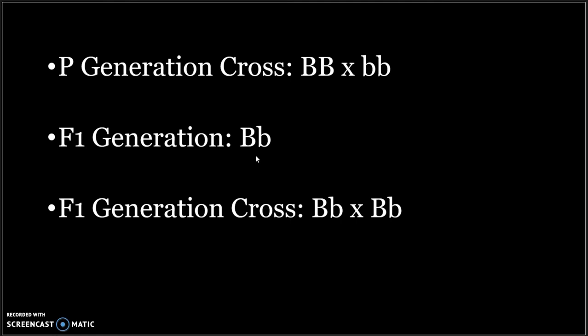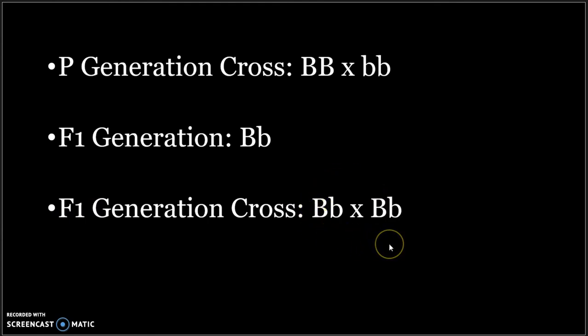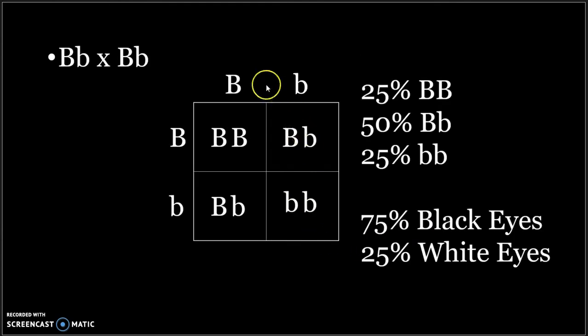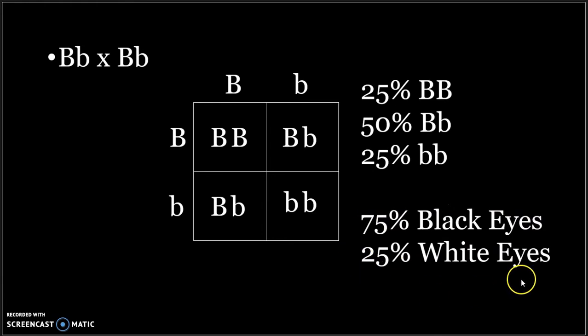To do the chi-squared test, we need expected values for the F2 generation. To get the F2 expected values, we cross the heterozygotes from the F1 generation. For this example, we'll visualize the cross with a Punnett square. The Punnett square shows that we expect 75% of the F2 generation to have black eyes and 25% to have white eyes.